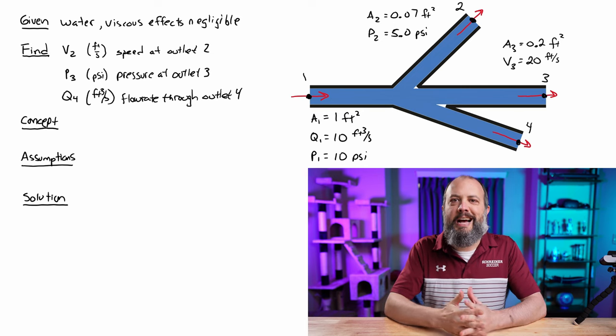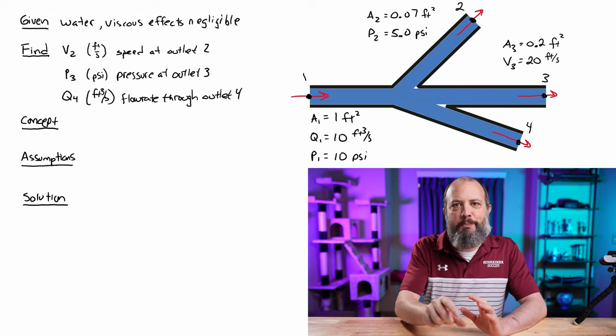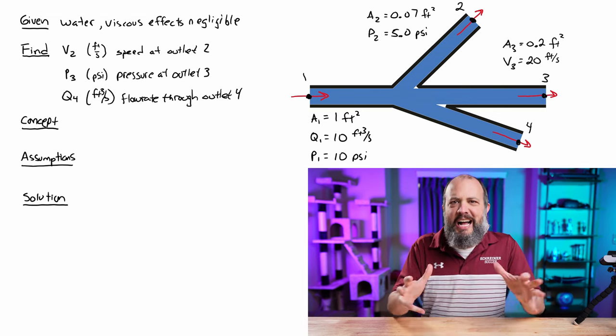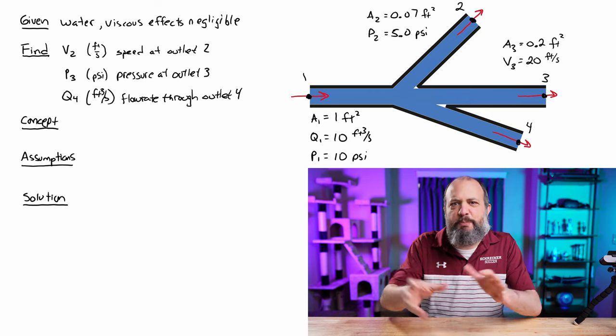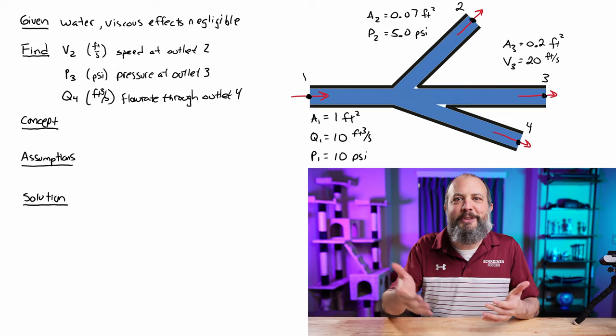For this Bernoulli equation and continuity equation fluid mechanics example problem, we've got one inlet pipe that branches out into three outlet pipes, and we've got a hodgepodge assortment of different information for each branch of the pipe, and we're trying to find a similar hodgepodge of information, something for each outlet.